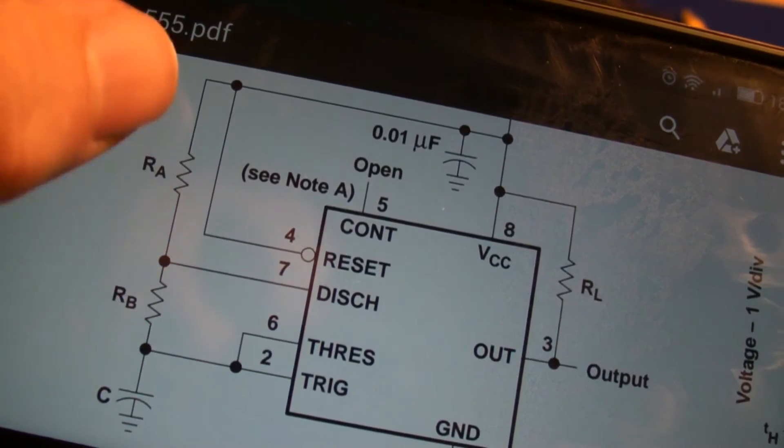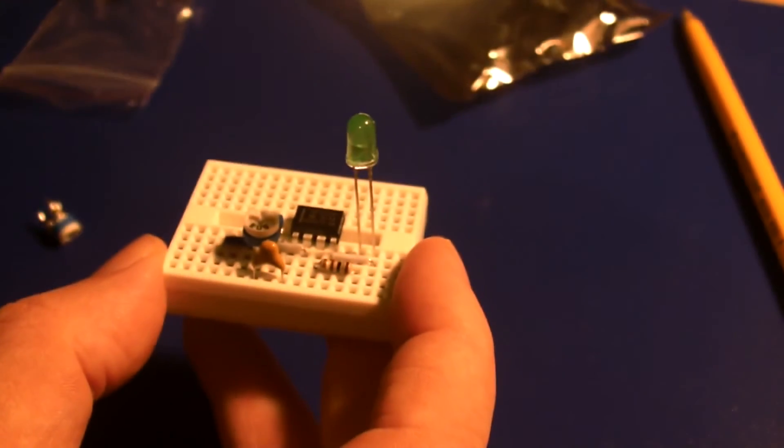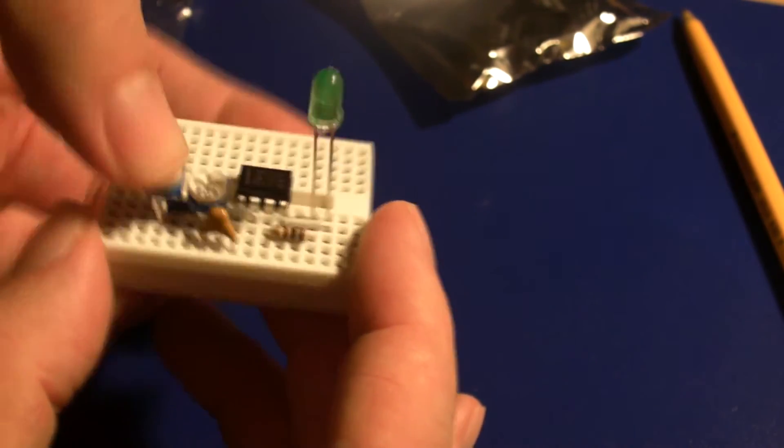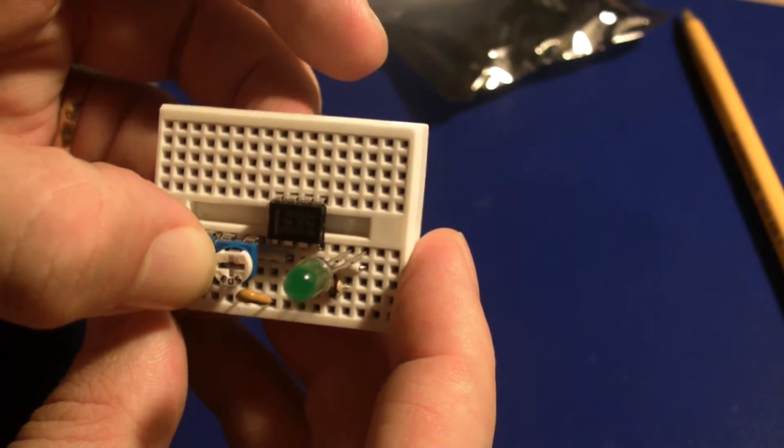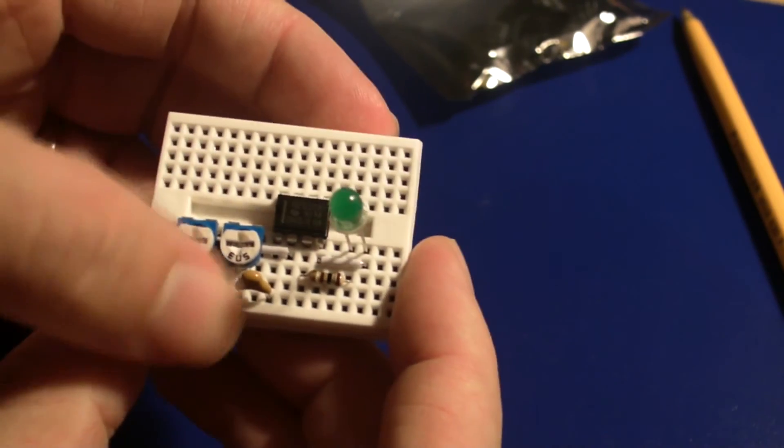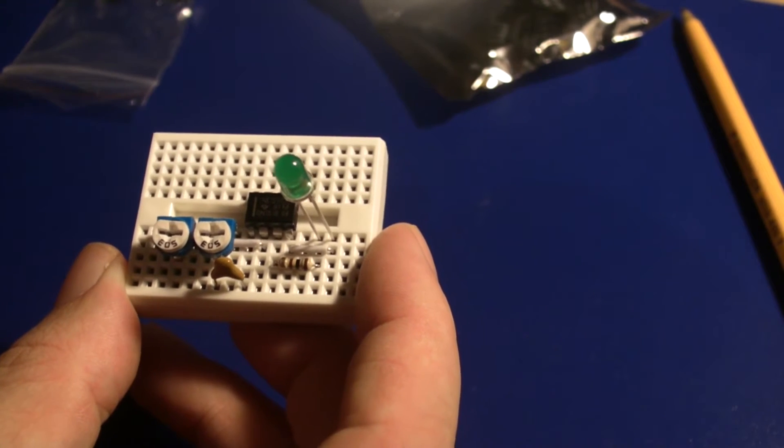Now the next point we need is resistor A. So we'll pop that in next to it. And again we're going to use the center tap on that to be the point at which that blue wire connects. So already we have resistor A, resistor B, the timing capacitor all connected as they should be.